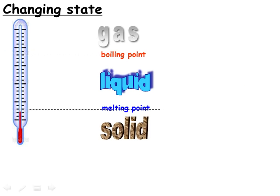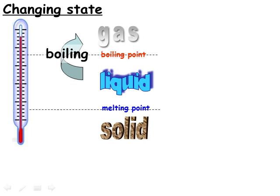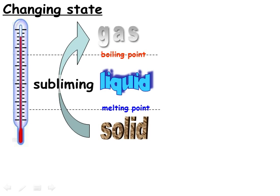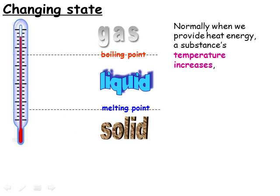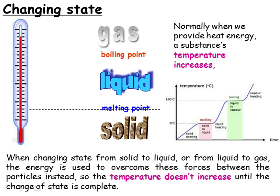If we start with a solid substance and increase its temperature, it will melt and become a liquid when it reaches its melting point. And if we further increase the temperature, it will boil and become a gas when it reaches its boiling point. Some substances go straight from solid to gas without becoming a liquid — this is called sublimation. When we put heat energy into a substance, we expect its temperature to increase. However, when a solid reaches its melting point, its temperature stops increasing. Instead, the energy we're providing is used to overcome the forces of attraction holding the particles in the solid in place, so that it can become a liquid.